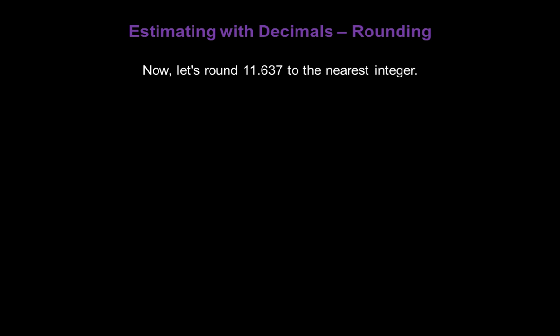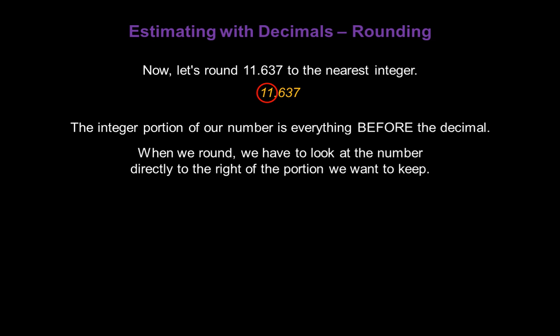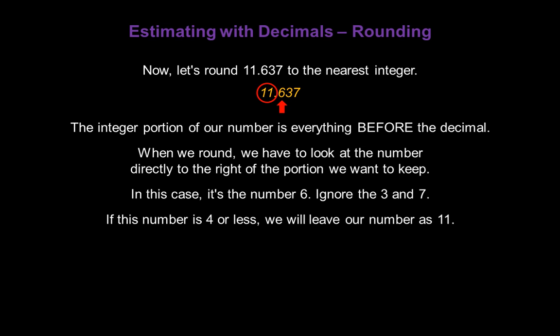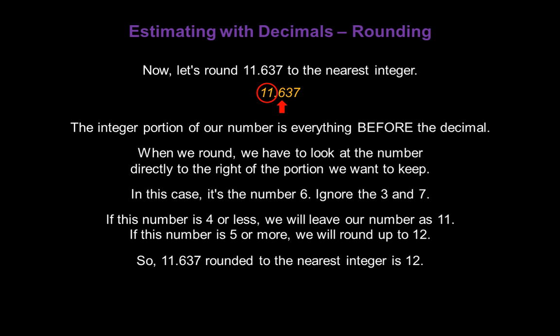Now, let's round 11.637 to the nearest integer. The integer portion of our number is everything before the decimal, so it's the number 11. And when we round, we have to look at the number directly to the right of the portion we want to keep. In this case, it's the number 6, and we're going to ignore the 3 and the 7. If this number is 4 or less, we will leave our number as 11. If this number is 5 or more, we will round up to 12. So 11.637 rounded to the nearest integer is going to be 12.